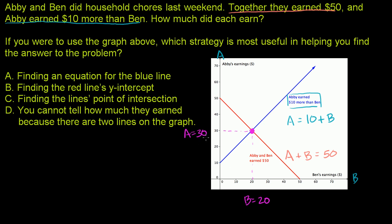And if we use these numbers, together they earned $50. That works. If Abby earns $30 and Ben earns $20, they'll earn $50, and $30 is $10 more than $20. So this worked. By looking at the point of intersection, we're able to figure out how much Abby and Ben earned. So I would go with C. We don't even have to read D, but they say you cannot tell how much they earned because there are two lines on the graph. No, that's complete silliness. So the choice is C.